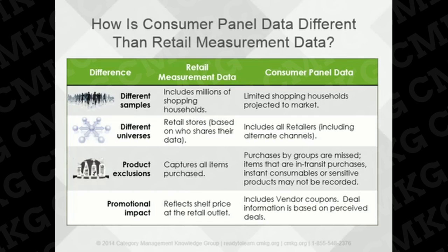Also, some categories and items may not be recorded due to instant consumables, in-transit purchases, or sensitive or embarrassing products that consumers choose not to record. Finally, there's a difference in promotional measurement. Retail measurement data reflects different promotional vehicles at a retail outlet, while consumer panel data includes vendor coupons, and promotion is only captured based on perceived deals that consumers received while shopping.